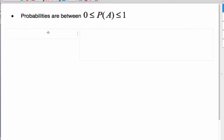We also know that probabilities have to be between zero and one. That's always true. It cannot be more than one. It cannot be less than zero.